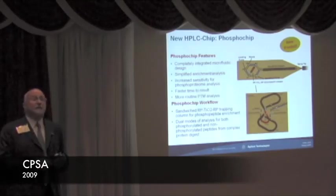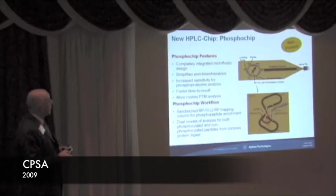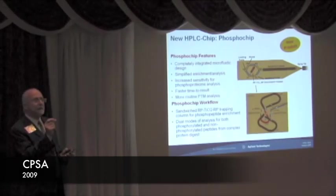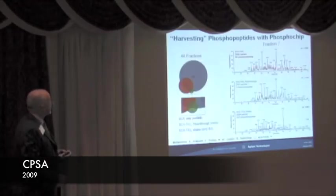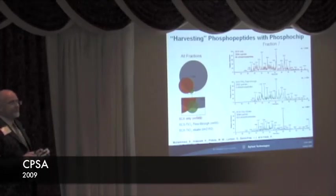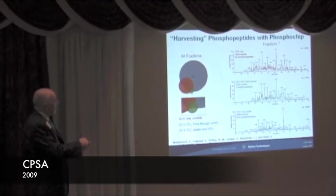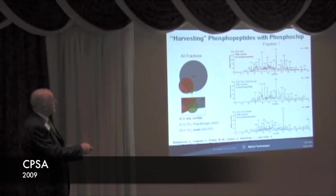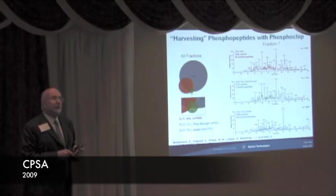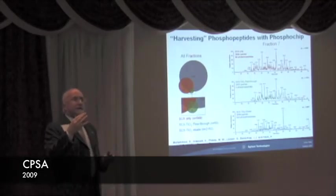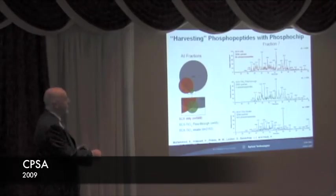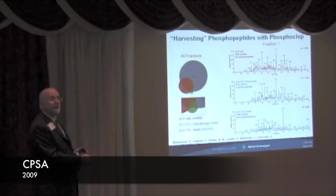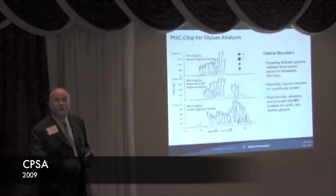Another workflow we've developed on the chip technology is the enrichment of phosphopeptides. Here we're using a design originated from Albert Heck's lab at Utrecht University, where we sandwiched a reverse-phase titanium dioxide trap in between two reverse-phase traps. This allows us to, in the case of these embryonic kidney cells which were SCX fractionated first — taking one fraction and running it through this chip — see about 84 phosphopeptides by straight nanospray LC-MS. Running it through the phosphopeptide chip, the flow-through shows virtually no phosphopeptides; then we elute off the phosphopeptides from the titanium dioxide trap and see over 600 phosphopeptides in that same fraction — a great enrichment.